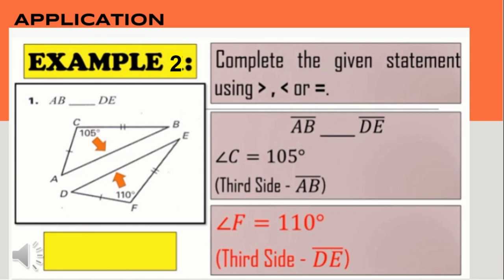For example number 2, line segment AB is blank compared to line segment DE. In the given figures, there are two pairs of congruent sides: line segment AC and line segment DF are congruent, and line segment CB is congruent to line segment DF. The included angle of triangle ABC, which is angle C, is 105 degrees. The included angle of triangle DEF, which is angle F, is 110 degrees. Since angle C is less than angle F, therefore line segment AB is less than line segment DE.